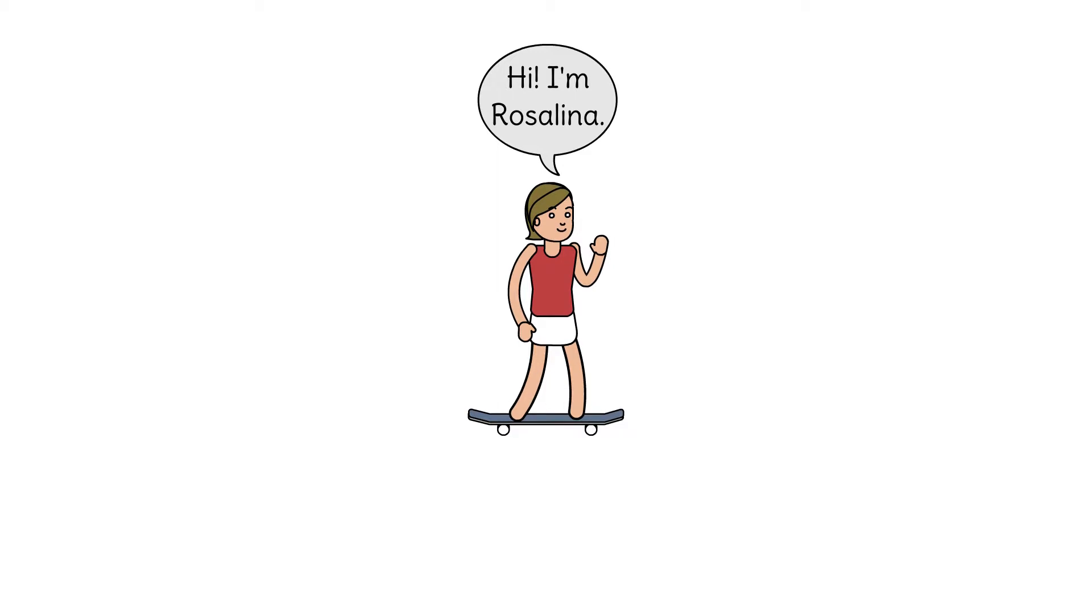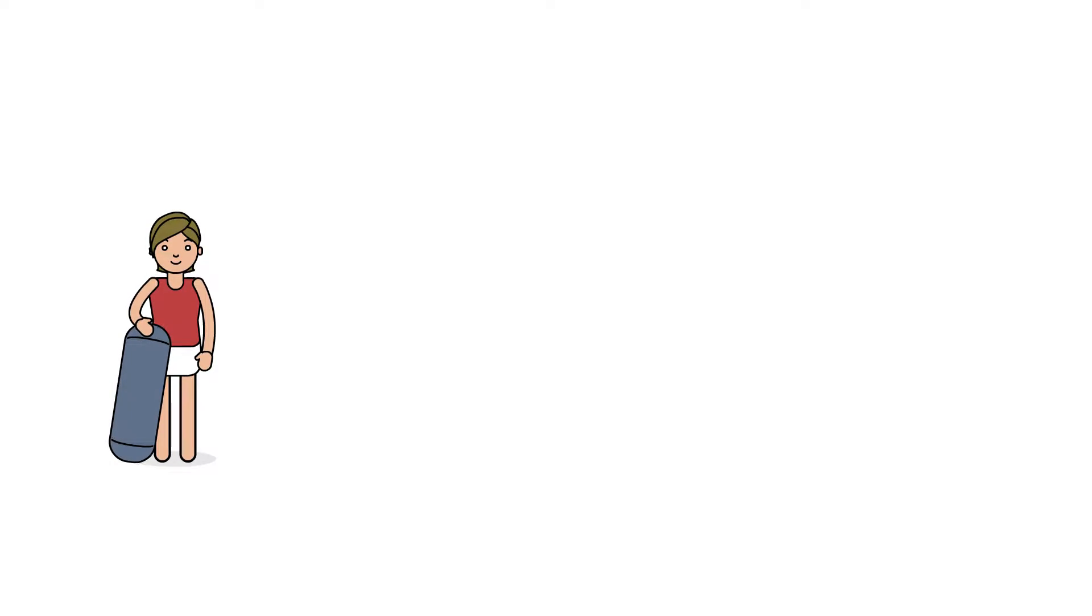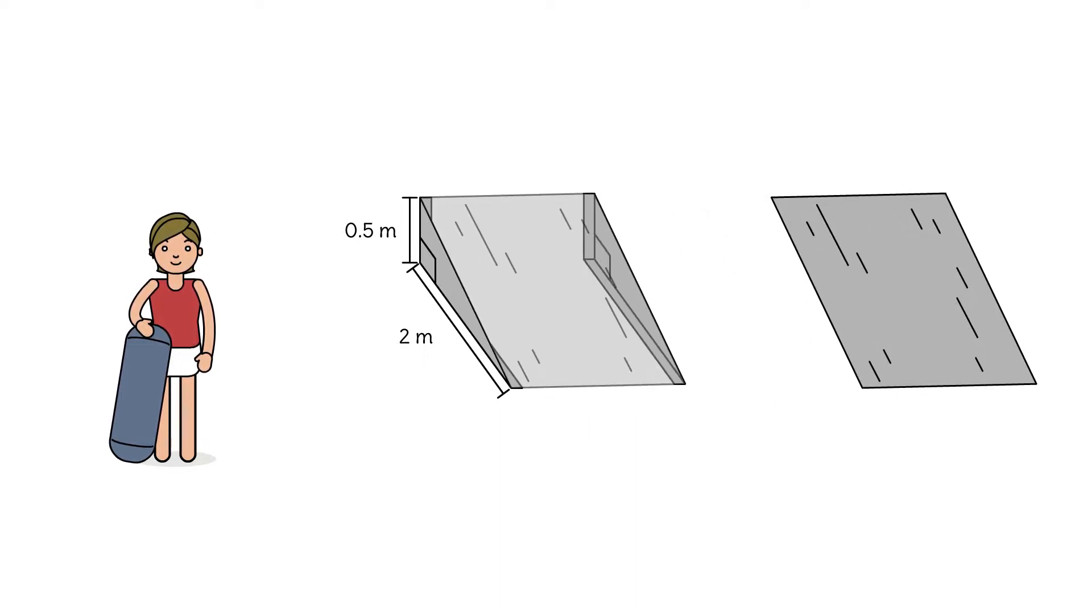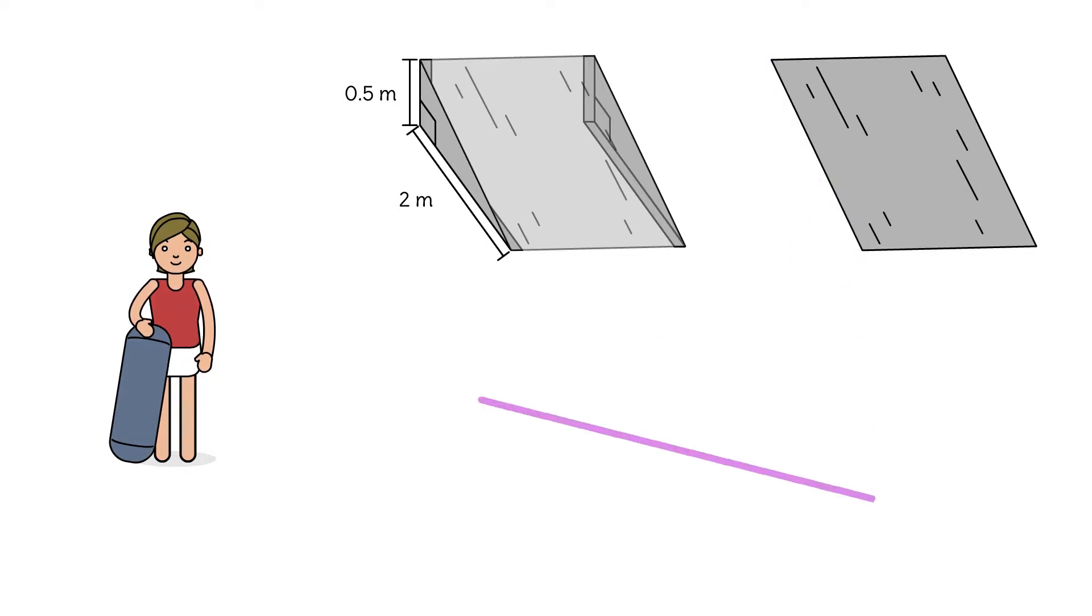Rosalina loves to skateboard and wants to build a ramp to perform tricks. Her ramp will be a triangular prism. She wants the base of the prism to be a right triangle so that the ramp is stable. She designs it so that it's 2 meters long and 0.5 meters tall. Those are the legs of the right triangle. Now she needs to cut a piece of plywood for the face of the ramp. That's the hypotenuse of our right triangle. What's the correct length?